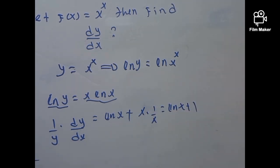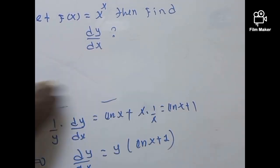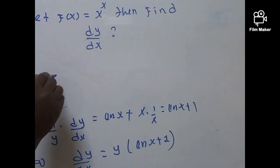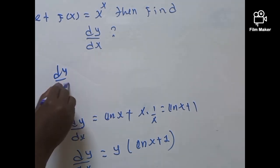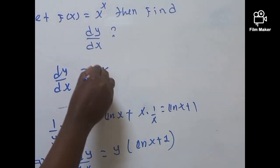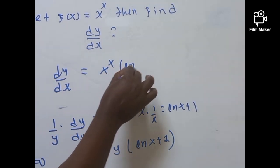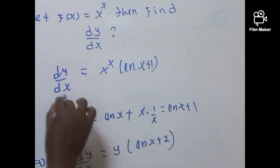And now this implies that this is perfectly given by dy by dx is exactly Y into ln of X plus 1. So this is exactly given as, now this will be dy by dx is perfectly given by dy by dX is exactly X raised X into ln of X plus 1. So this is the answer.